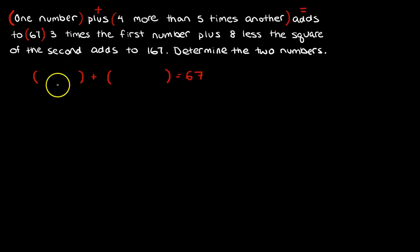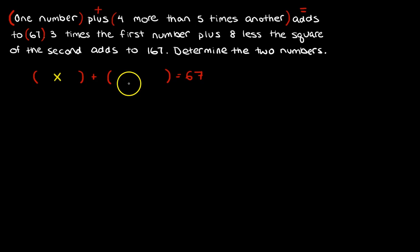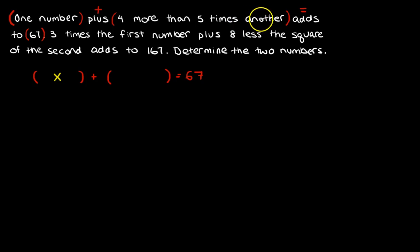So the question is, what are those things? Well, one number — I don't know what that number is, so I have to call it something. Most of you probably called it X. Then it's four more than five times another. I've found it's better to start from the end and go backwards. 'Another' is another number — I'm going to have to call it something else: that's Y.